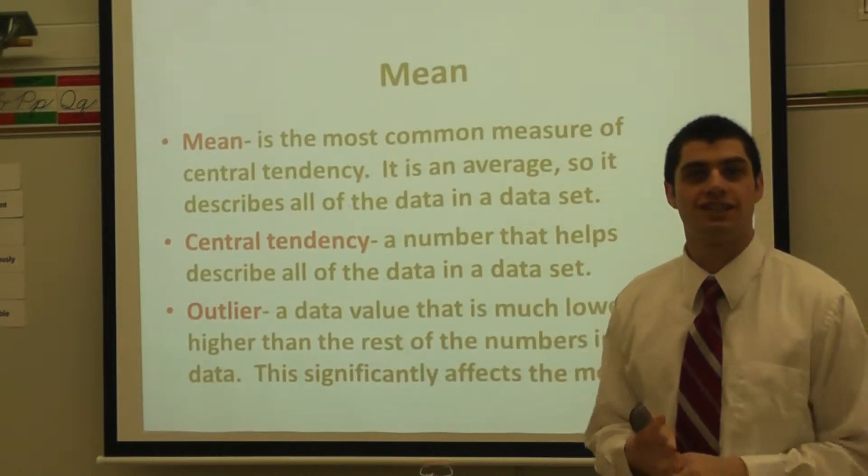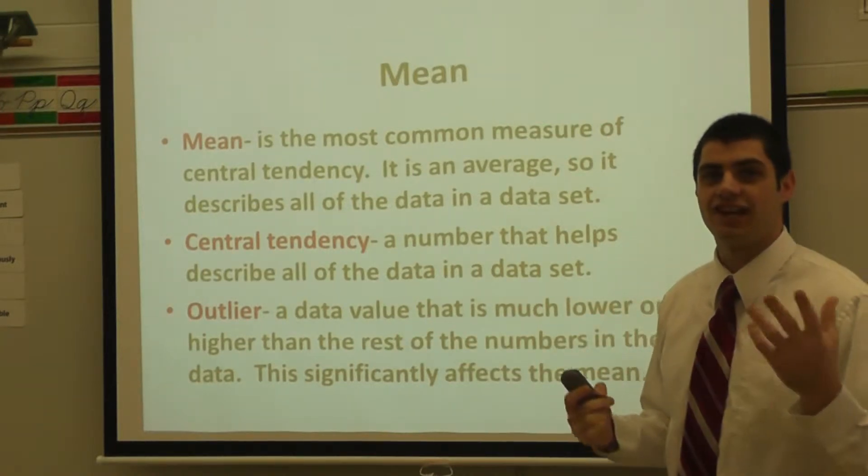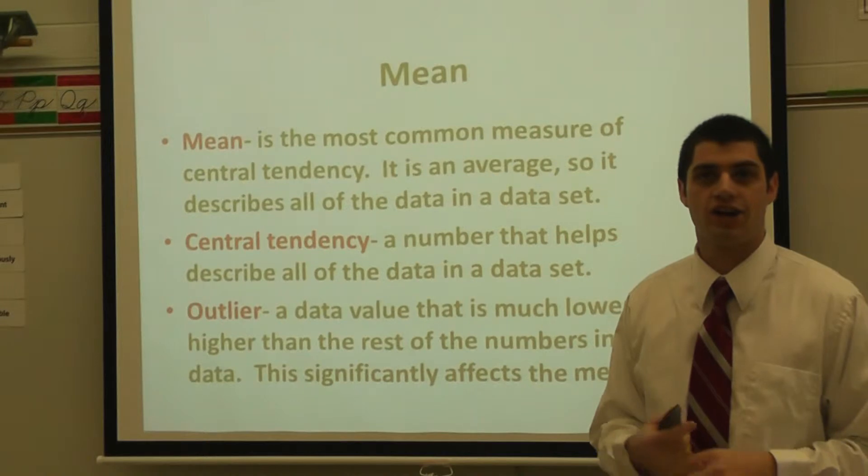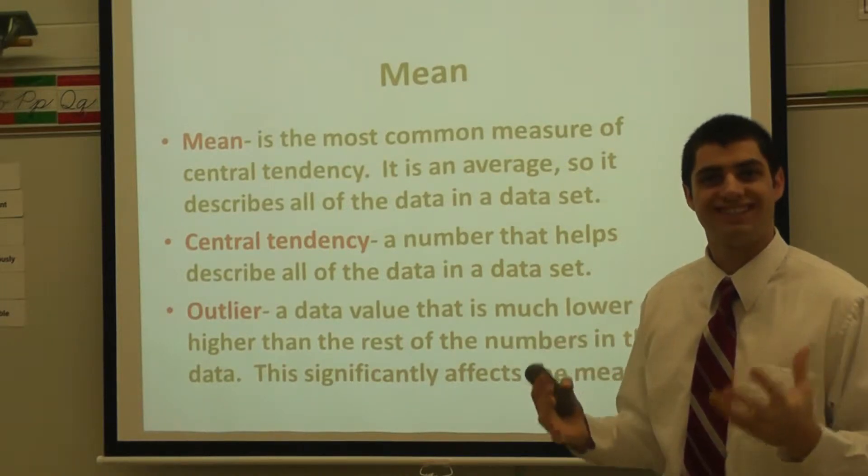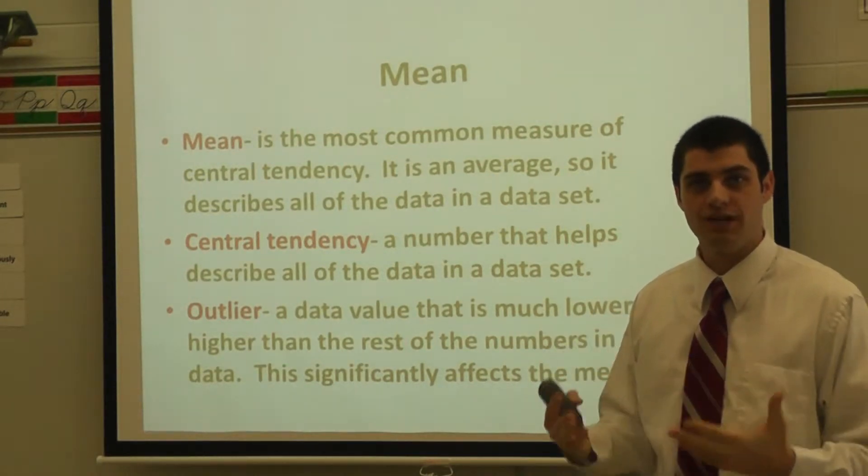An outlier, which you might see inside a data set, is a value that is much higher or lower than the rest of the data in that data set. And it greatly affects the mean.